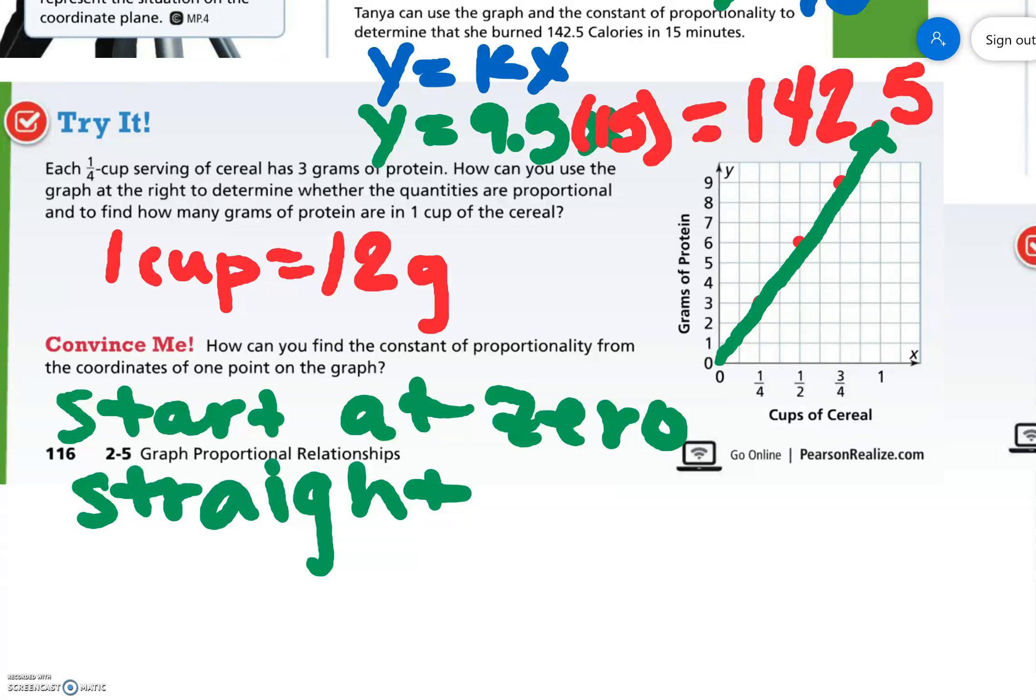Convince me. How can you find the constant of proportionality from the coordinates of one point on the graph? All we have to do, the constant of proportionality is at one. Remember that unit rate?